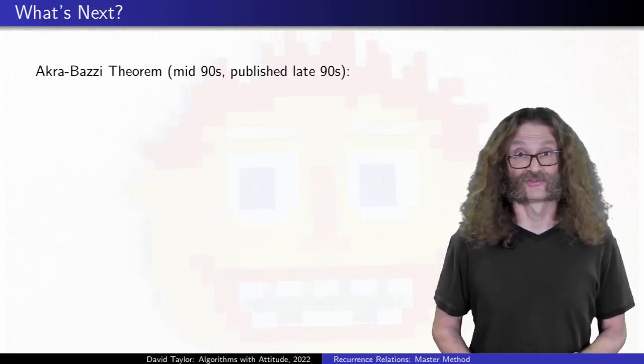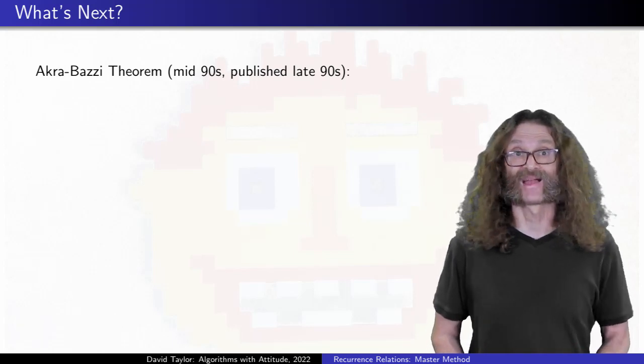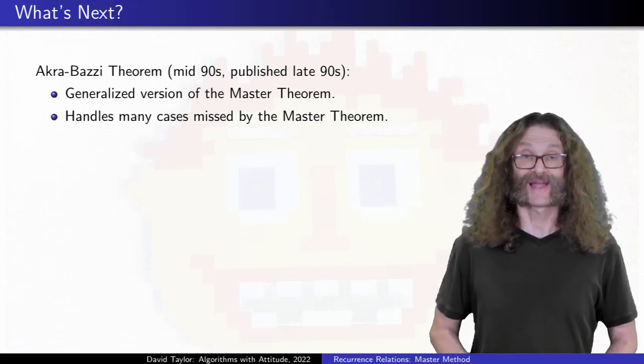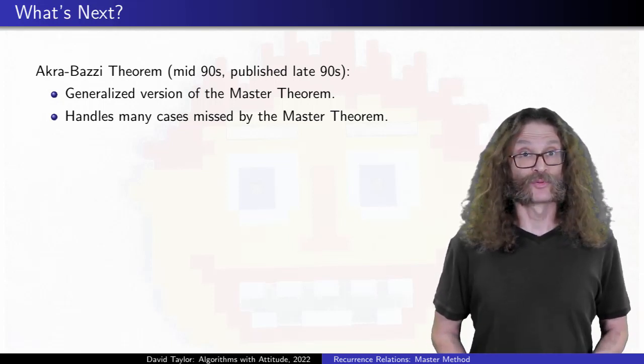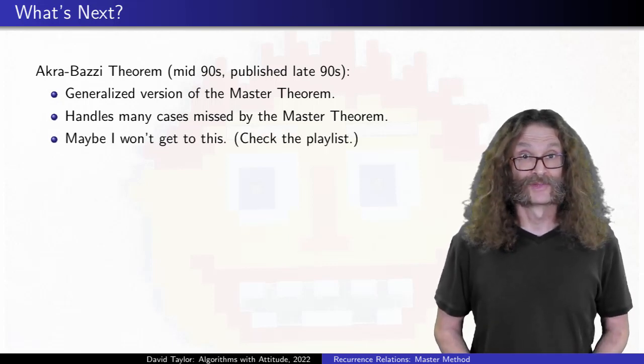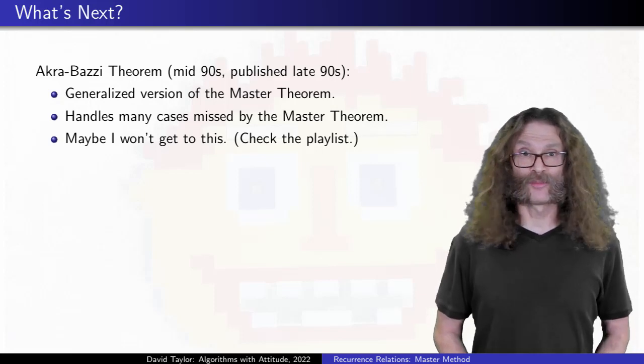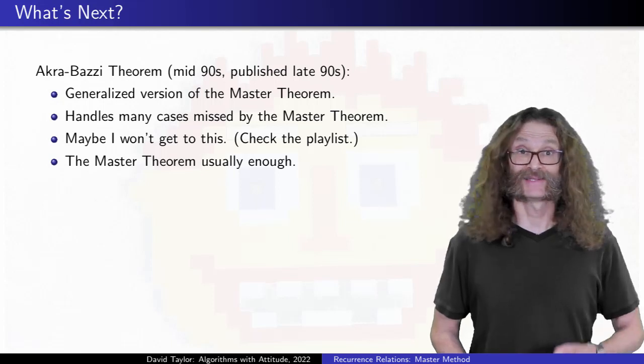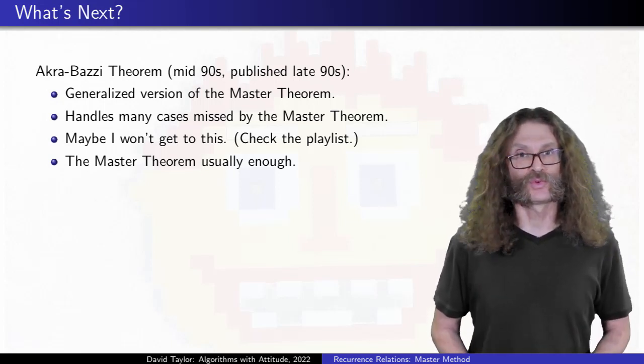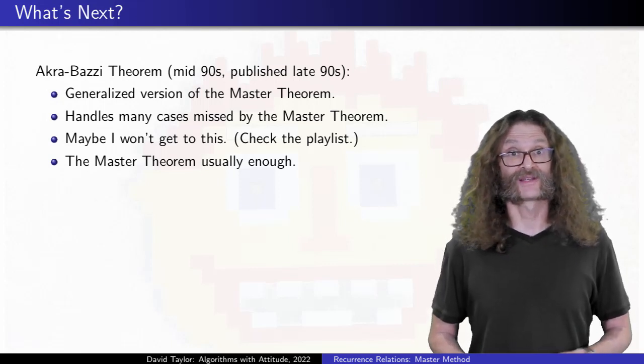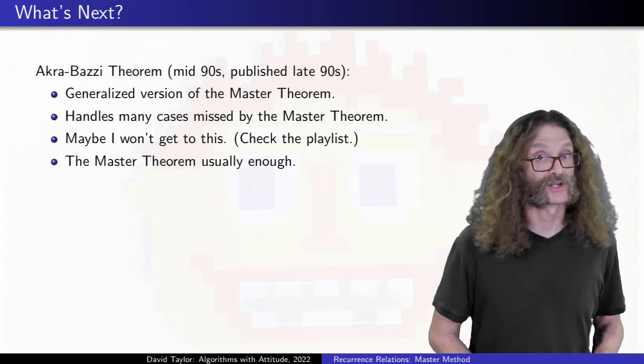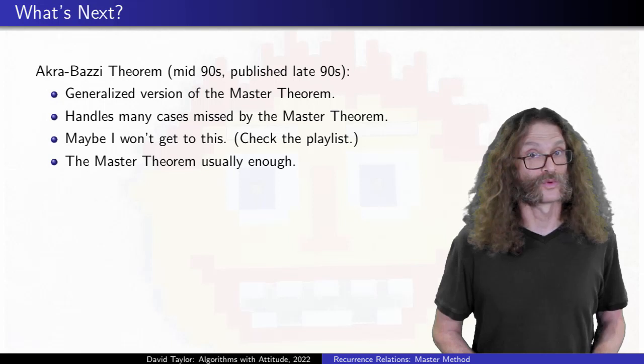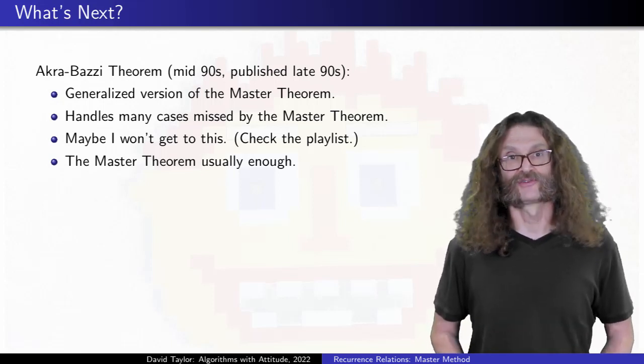An even more generalized version of the master theorem is called the Akra-Bazzi theorem, and it can handle multiple A and B values all in one recurrence relation like that last example. When they came up with it, I think Akra-Bazzi and Akra-Bazzi were students. It's neat, but the final form of our master theorem is usually powerful enough that you don't need anything more, and it gives a really nice intuition of what tips the scales between the cases of the theorem, just comparing that driving function against the watershed function.